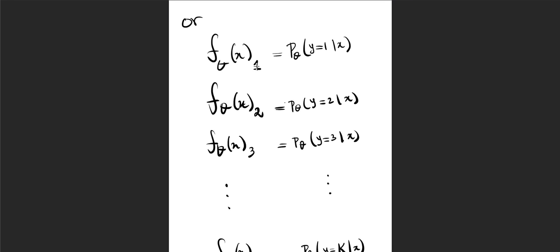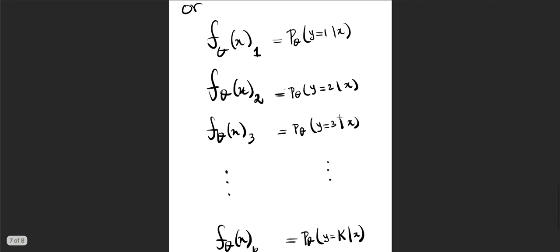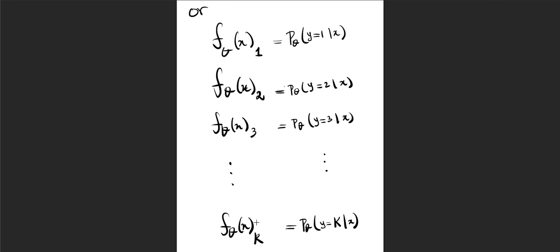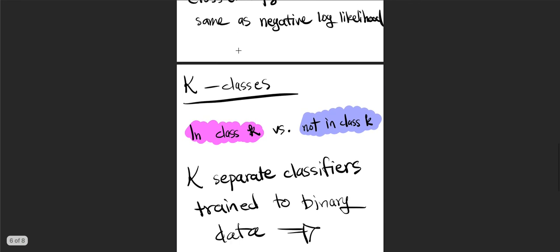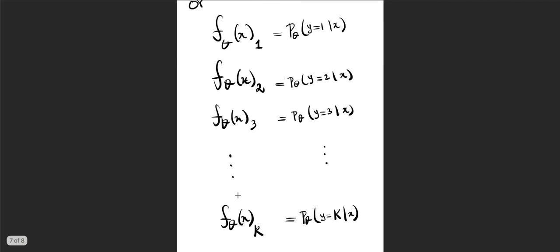The first function f_theta(x)_1 is a binary classifier identifying whether a point belongs to class 1 or not. You take the original K-class dataset and create a new dataset turning K labels into binary: belongs to class 1 or does not belong to class 1, then train a model — say logistic regression — on that. You repeat the same for class 2, and so on. A K-class classification problem boils down to learning these K functions, one for each class.